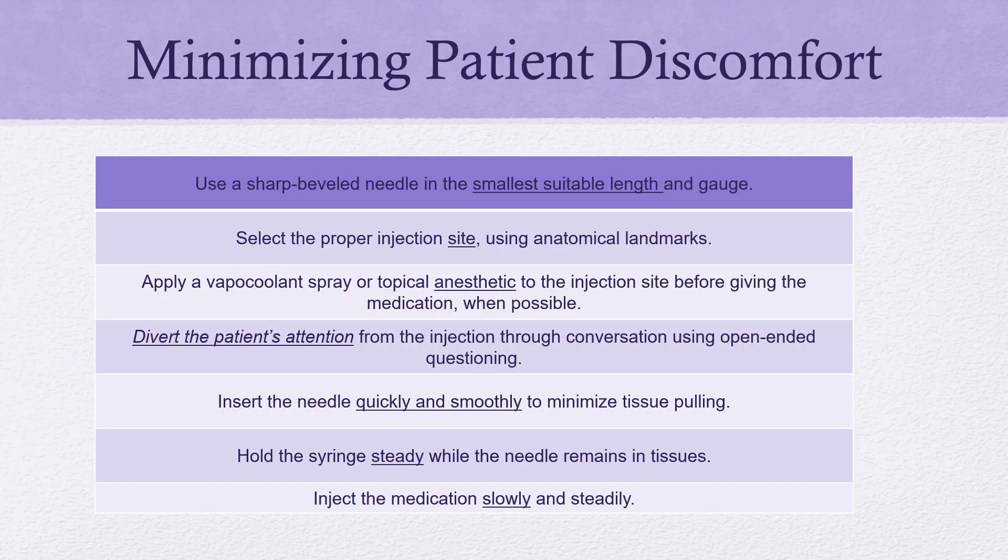How do we minimize patient discomfort? Use the smallest needle that is suitable — if you could go smaller, go smaller. Make sure the needle is sharp: even drawing up one medication makes the needle dull. If you put your needle through the hub of a vial, you've dulled that needle. Change out your needle and make sure you're selecting the proper site.